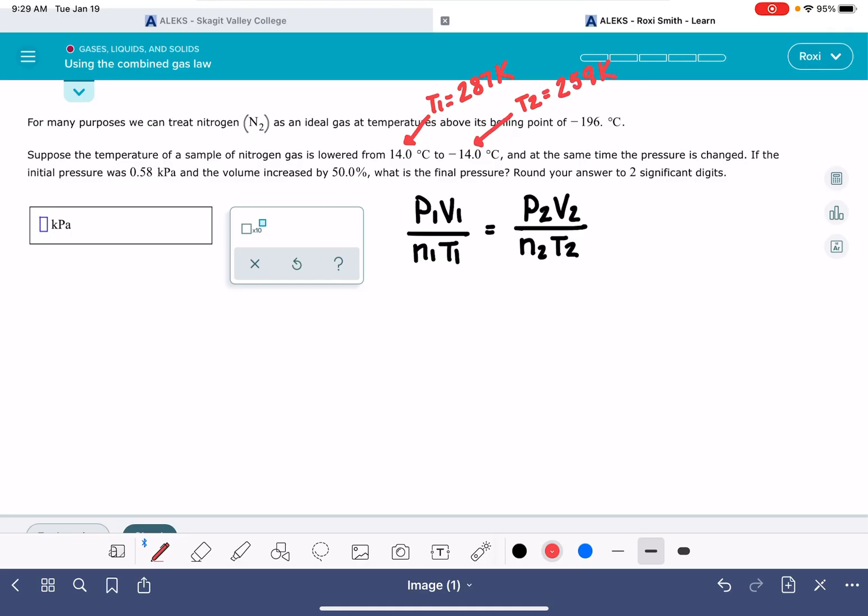It says that pressure is changed. The initial pressure is 0.58 kilopascals, so that's our initial pressure. The volume increased by 50%, so this is going to be a little bit tricky. This is where we're going to get information about our V1 and also our V2. And what is our final pressure? That's what the problem is asking us to solve.